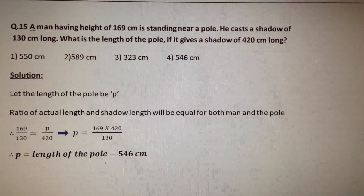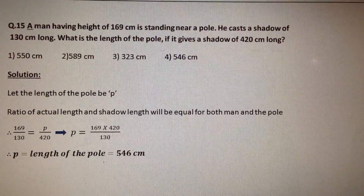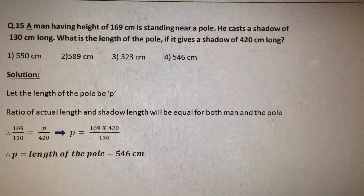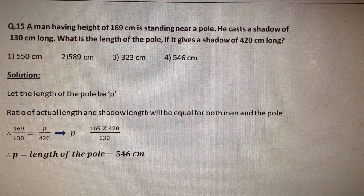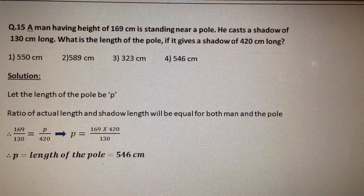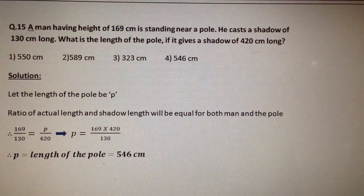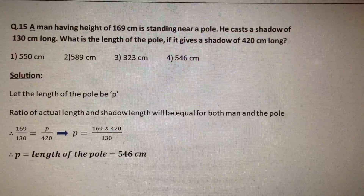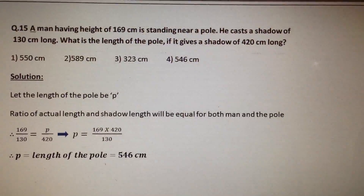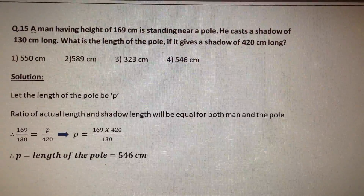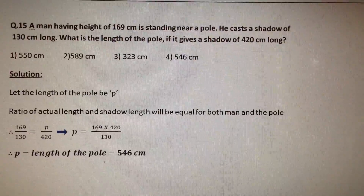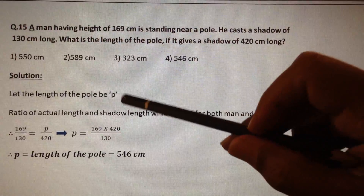A man having a height of 169 cm is standing near a pole. He casts a shadow of 130 cm long. What is the length of the pole if it gives a shadow of 420 cm long? Let us assume the length of the pole is P cm.